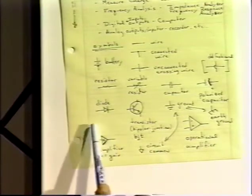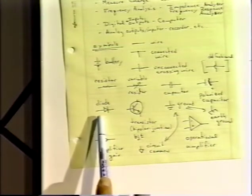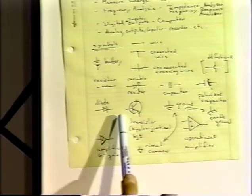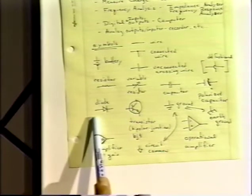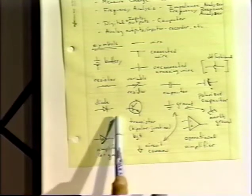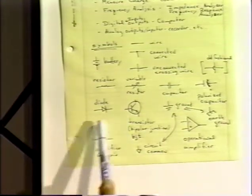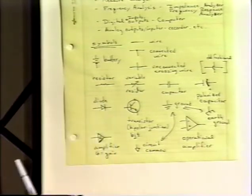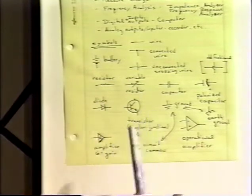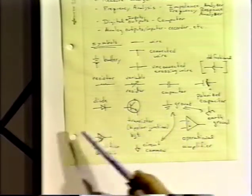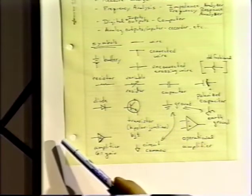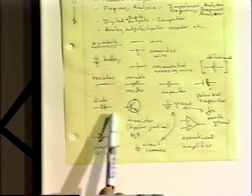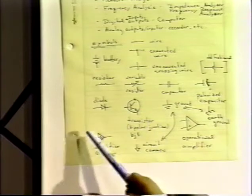Diodes are used to make rectifying junctions in which current will only flow in one direction. The little line at the end of the triangle suggests that current cannot flow back the other way — current flows in the direction the arrow points and is blocked in the opposite direction.